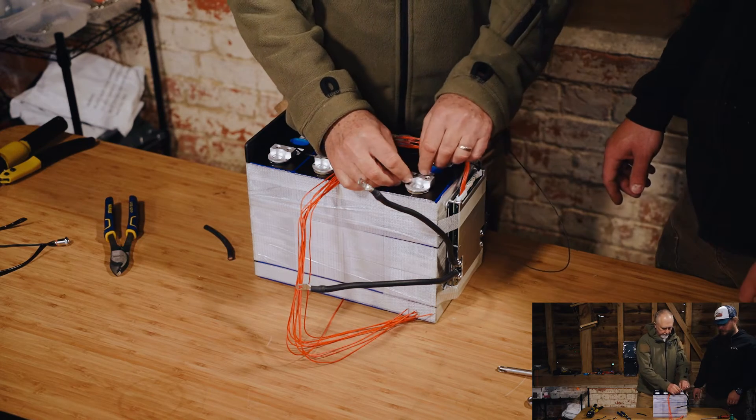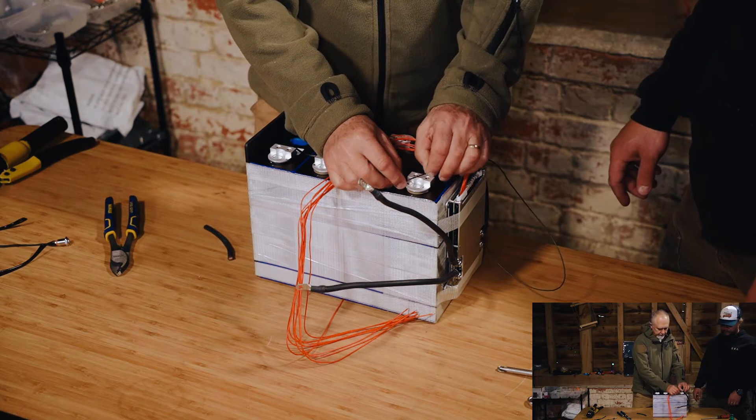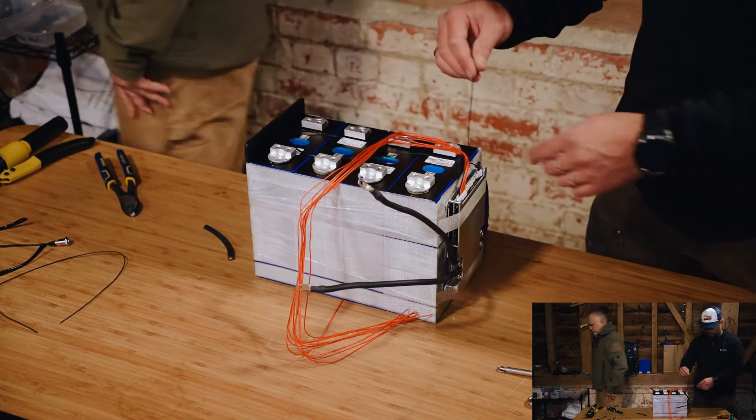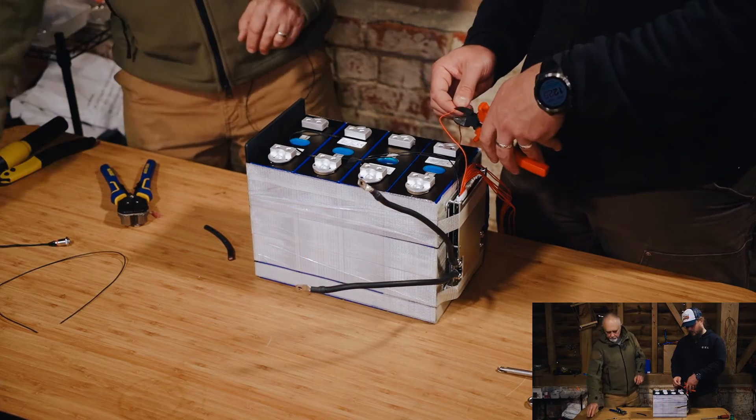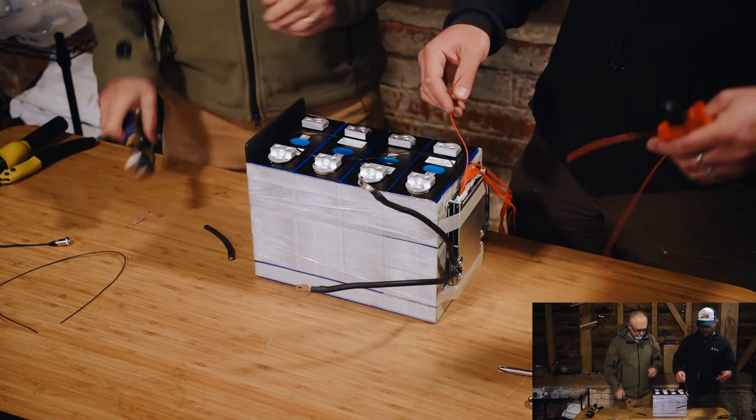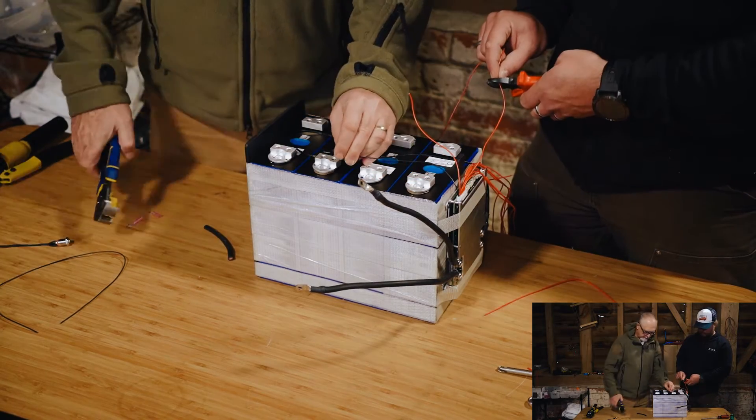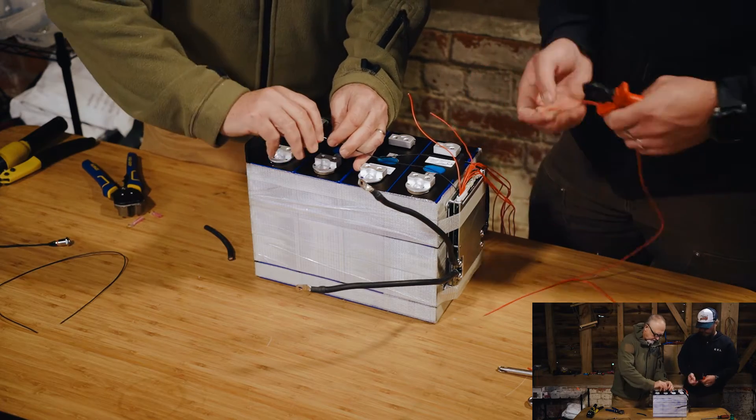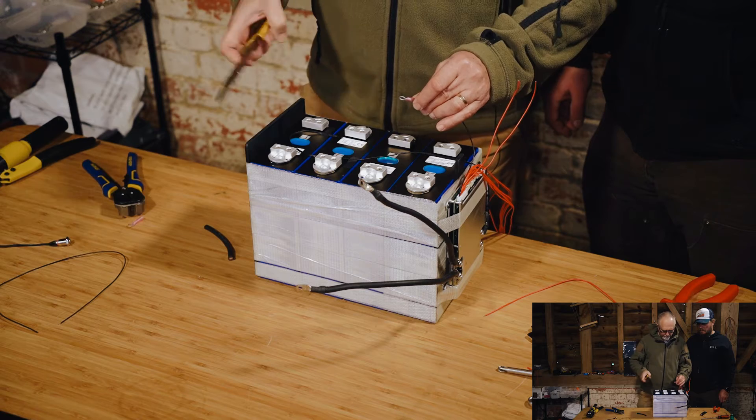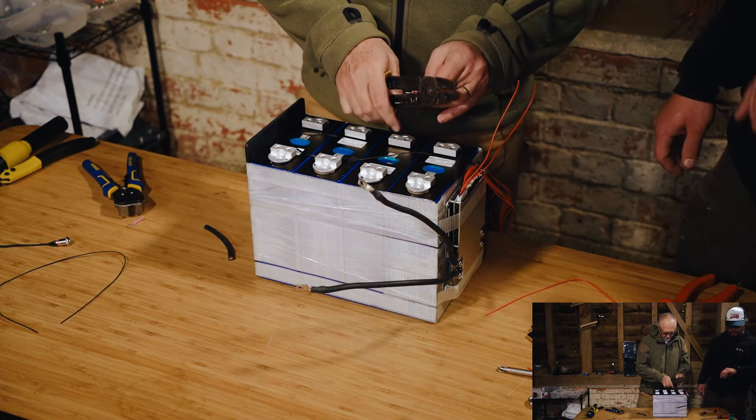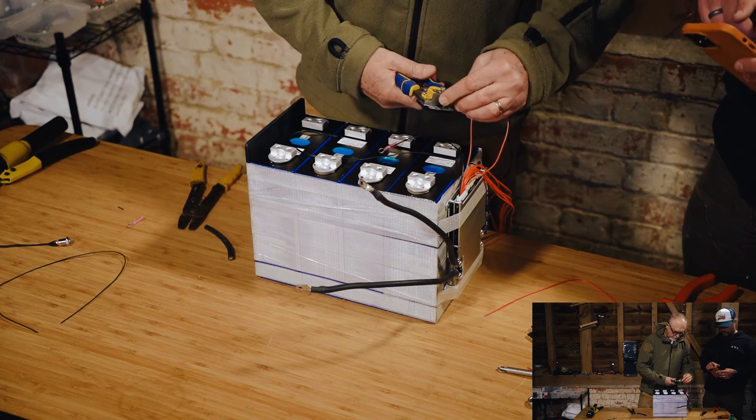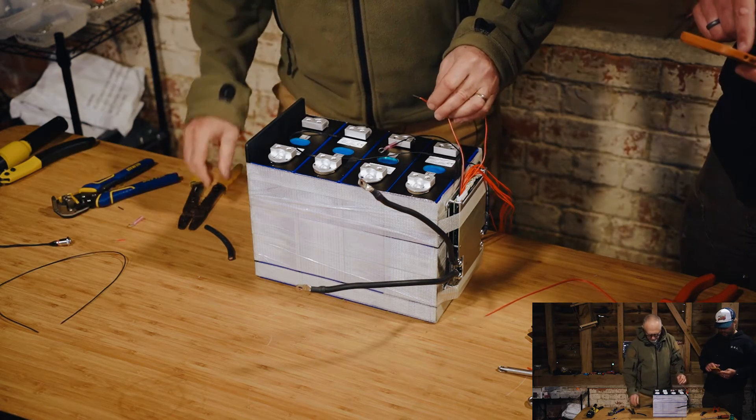We then measured all of the balance leads and cut them to length. So some people argue that you shouldn't cut balance leads because it can affect the performance. In reality, because they're not under load, there's no voltage drop on the balance leads. And they're moving such small currents when you have an active balancer like this JK BMS that I don't think it really makes a difference. It works quite well to have two people. Obviously, we could move pretty quickly. I was cutting the balance leads while my dad was terminating them. And yeah, worked pretty well. Got it done pretty quickly.